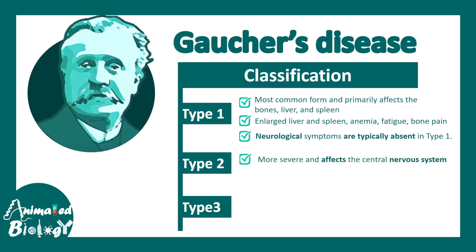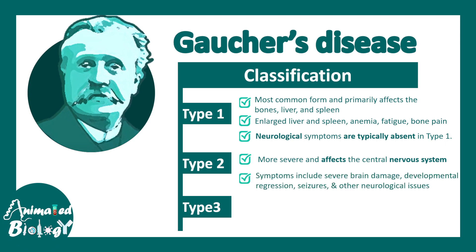In type 2, the most severe symptoms arise from the central nervous system. The symptoms include severe brain damage, developmental regression, seizures, and other neurological issues.